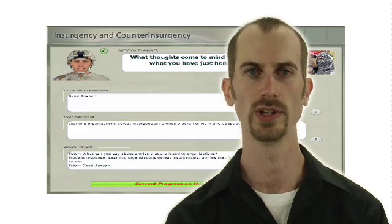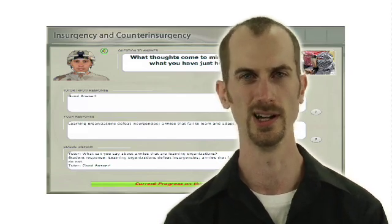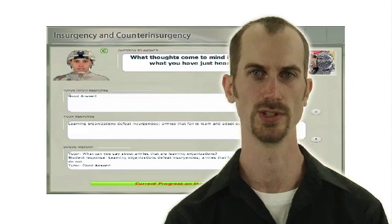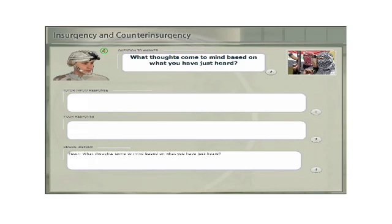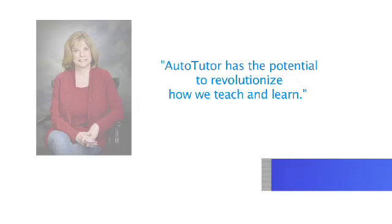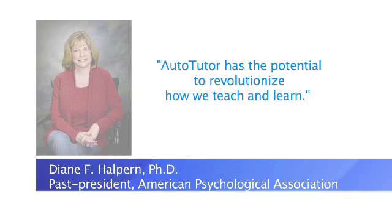Students do more on their own to construct an answer rather than answer an easy fill-in-the-blanks question. I begin by asking a general question: 'What thoughts come to mind based on what you have just heard?' This general question requires the learner to provide four distinct answers to gauge whether they've captured the material previously presented. I can recognize the key concepts in the student's typed response.